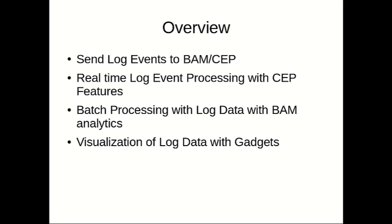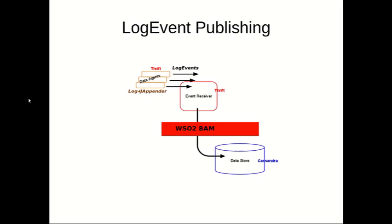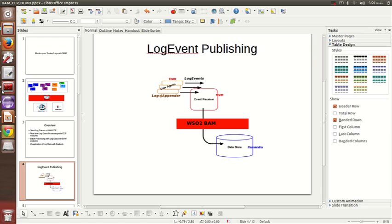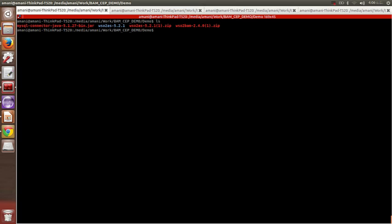We will also be discussing how you can process batch data using BAM analyzers for long-running data. Finally, we will discuss how you can create gadgets to analyze data using the gadget gen tool and BAM dashboards. To send log events to BAM, I'm going to use a log4j appender which will publish log events to BAM event receivers, and BAM event receivers will capture this data and send it to Cassandra.